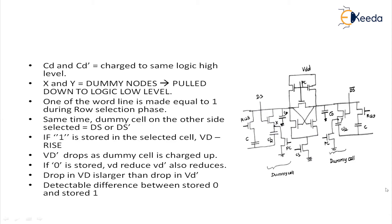There are two nodes named X and Y — they are the dummy nodes of the dummy cell, and these nodes are pulled down to the logic zero level. Initially, node X and node Y are pulled down to logic low level. During the row selection phase one of the word lines is made equal to one. We know a capacitor will be accessed through the word line — so if I activate the particular word line, a particular cell is selected. When the word line is selected, the MOSFET's gate connected to the word line turns on. During the row selection phase, the dummy cell on the other side is also selected. When R128 is selected, the dummy cell on the other side of the latch, which has node Y, will also be selected through the DS bar line.